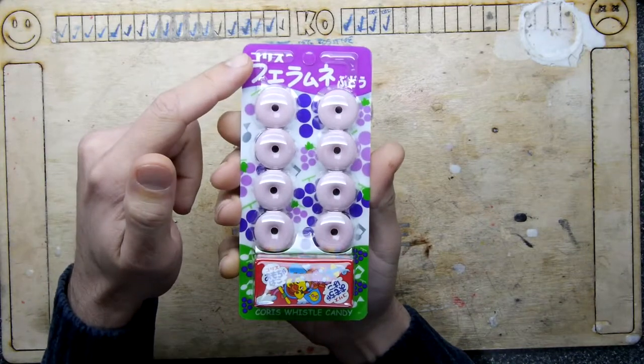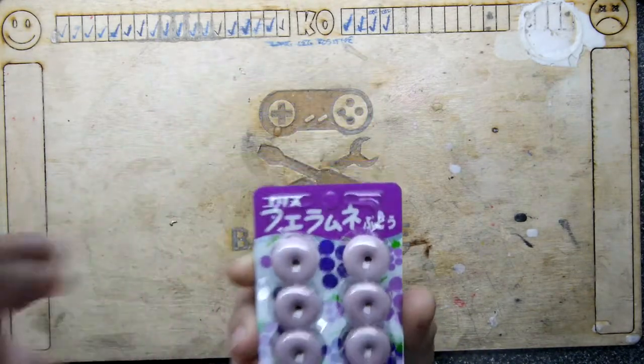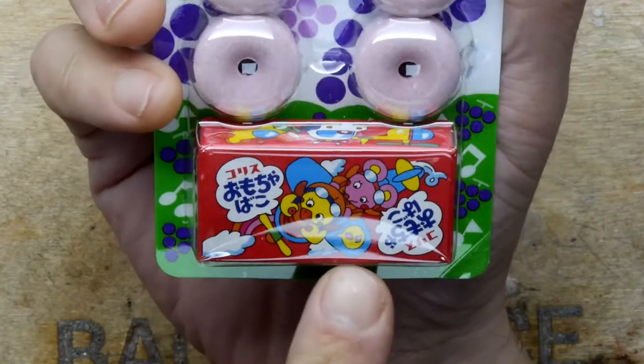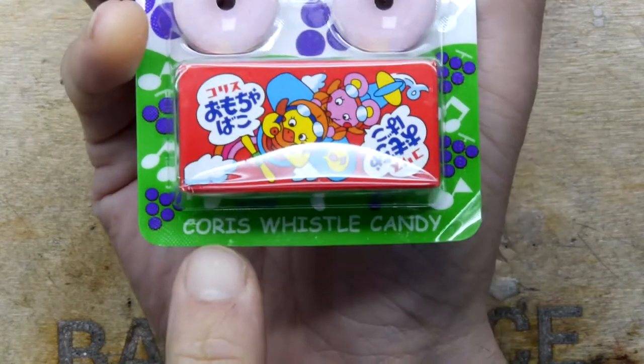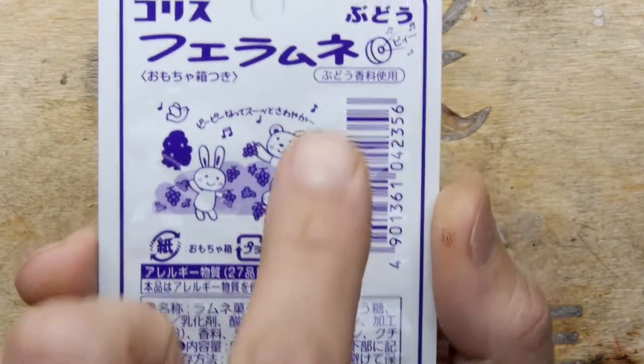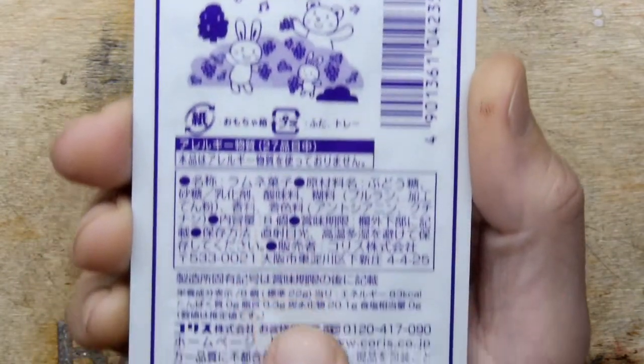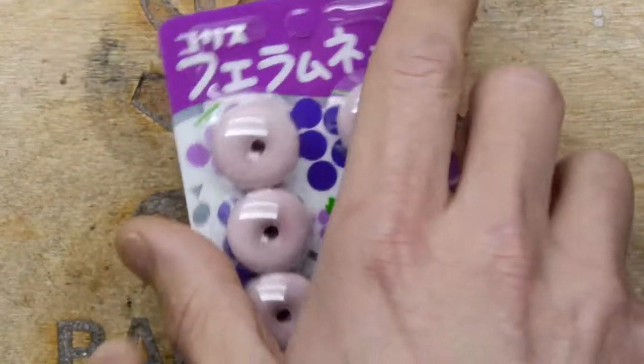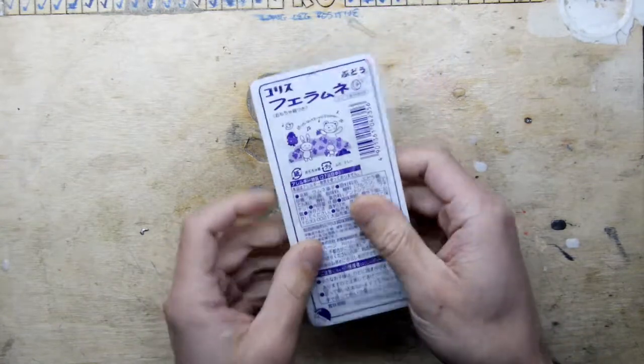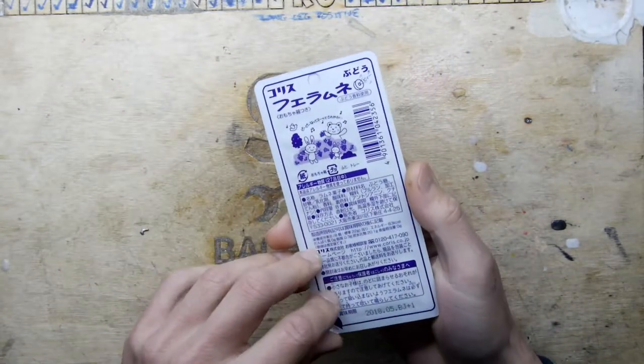Hopefully you can see that writing quite clearly there, and there's another little bit of writing and graphics on this box. Coris Whistle Candy - it's fascinating because it shows music coming out the center there. I want to give it a go. It's just so weird looking and I don't know what's in this box. It's so Japanese.